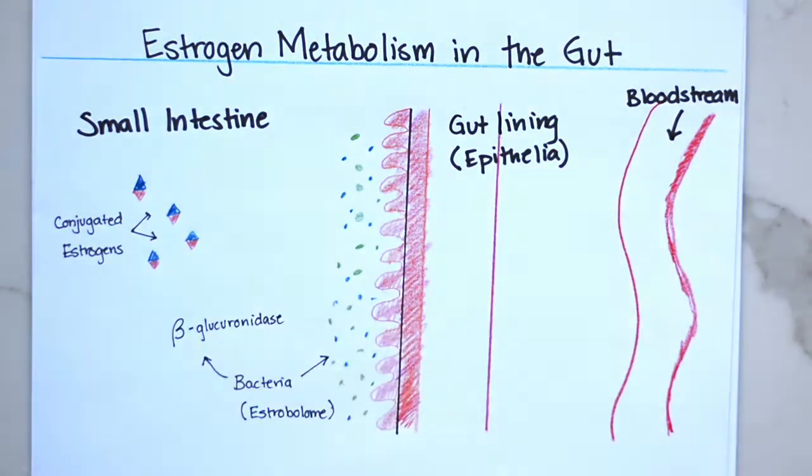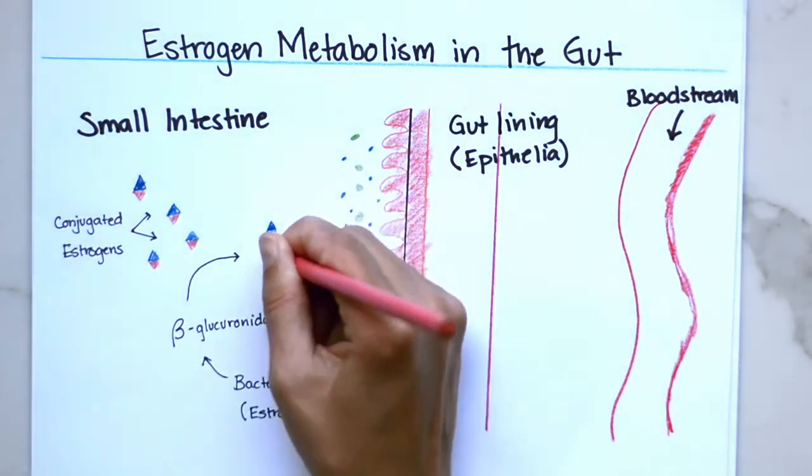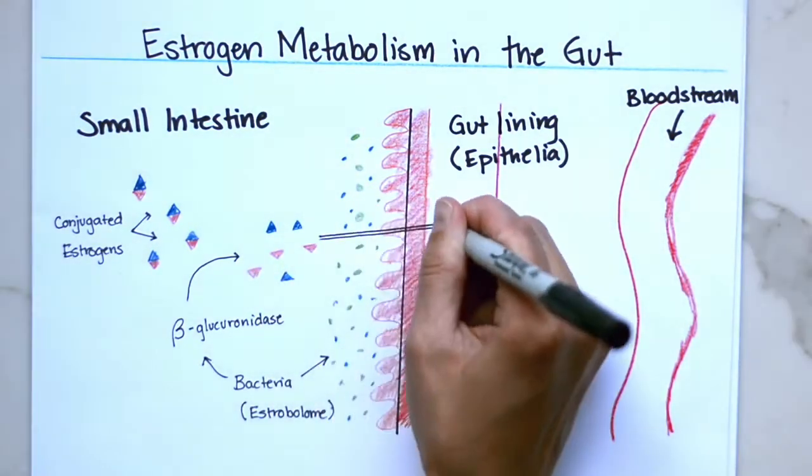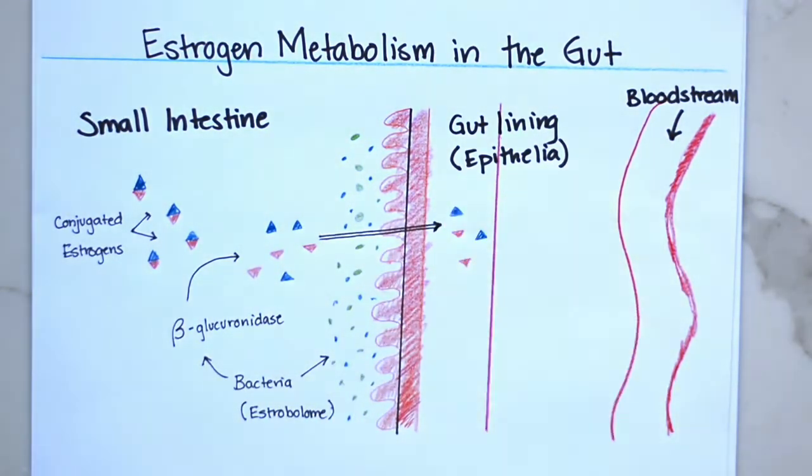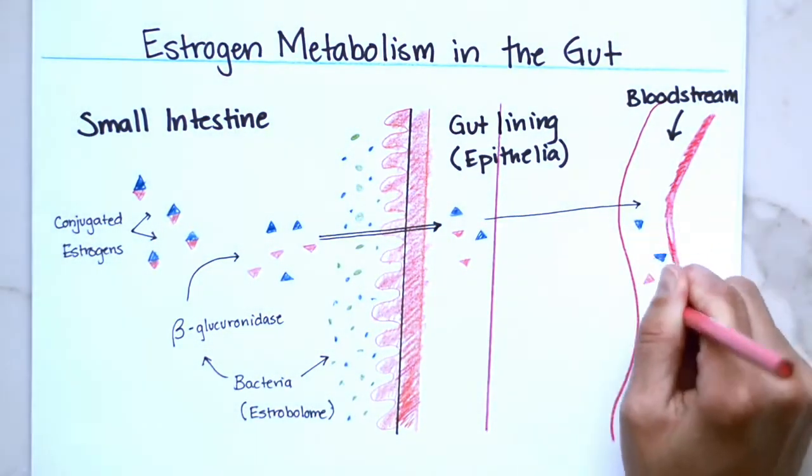They secrete an enzyme called beta-glucuronidase, which breaks down the conjugated estrogen, allowing it to be reabsorbed by the gut and then into the bloodstream.